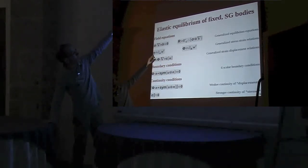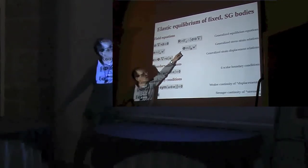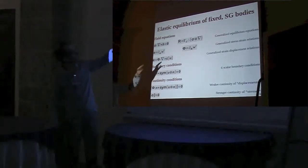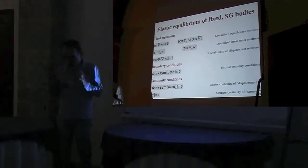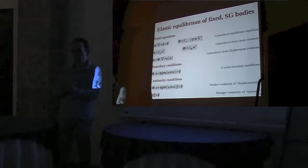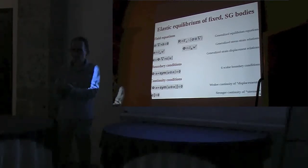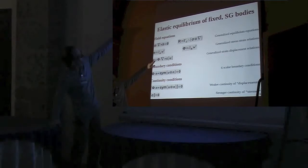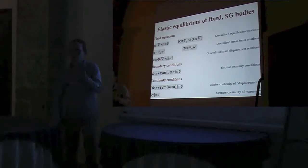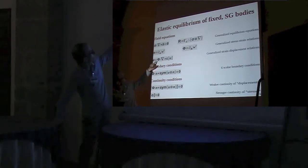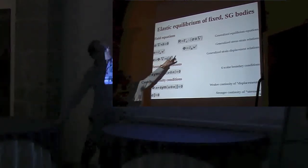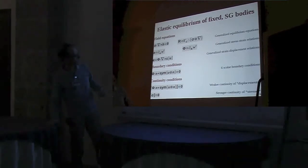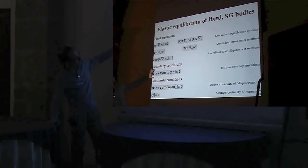The generalized stress-strain relations show that E, the total strain, is energy conjugate to the stress, and phi is energy conjugate to the trace-free part of the stress gradient. Phi has a very particular meaning: it plays the role of both a generalized displacement and a generalized strain. The generalized strain-displacement relations show that the total strain is not simply the symmetric part of the gradient of a displacement field — it is the total strain minus the divergence of the micro-displacement.